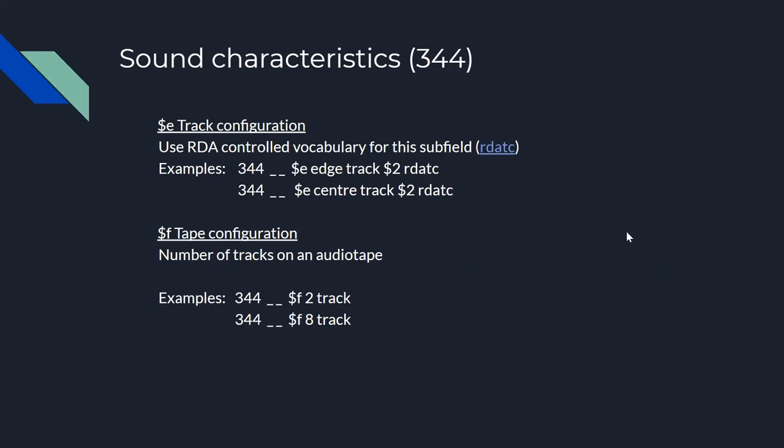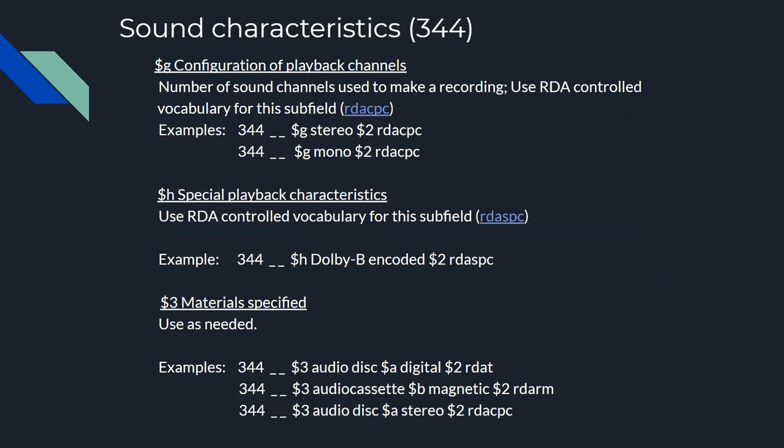There is also track configuration and tape configuration in the 344. Additionally, configuration of playback channels and special playback characteristics. You can also use subfield 3 in the 344 in the same way as in other fields, to distinguish what part of the described material is being represented by that specific 344. This can be especially useful in collection cataloging when collections contain multiple material types.